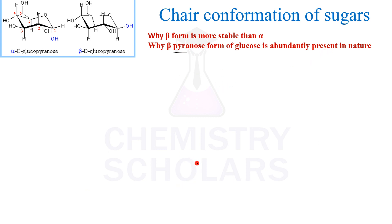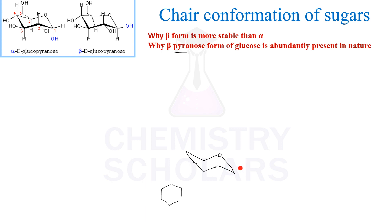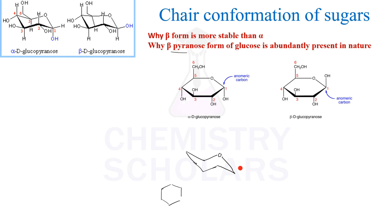The first thing we need to understand is that the cyclic six-membered ring always exists in chair form. For a six-membered ring, there are four forms: chair form, twist-boat form, boat form, and half-chair form, out of which the chair form is the most stable. Glucose can form two types of structures: furanose and pyranose. This is a pyranose structure.